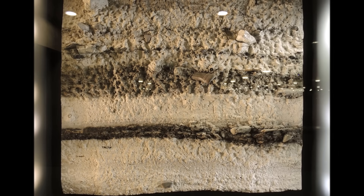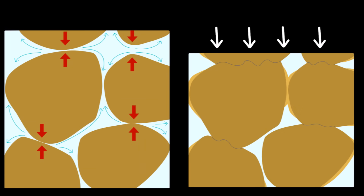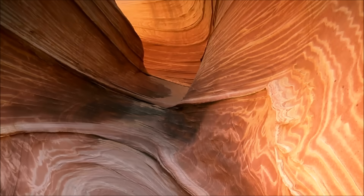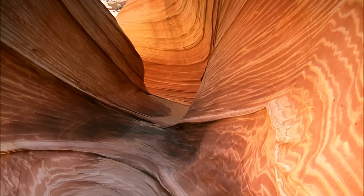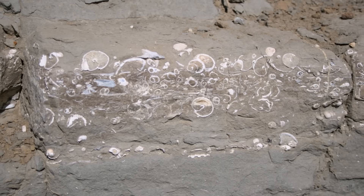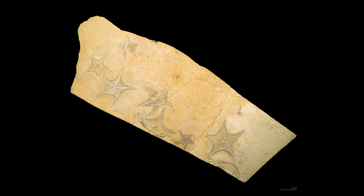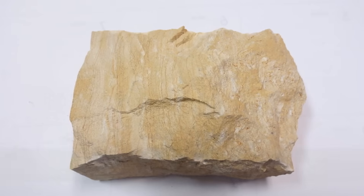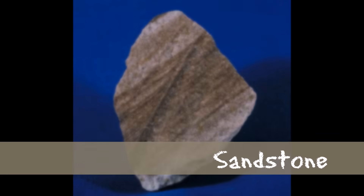Sedimentary rocks are formed when sediment accumulates over time in deposits that form layers. These layers become squeezed and compressed over time until they consolidate into a rock. Sedimentary rocks are the types of rocks in which fossils may be found, since the process of forming sedimentary rocks can preserve plant and animal remains deposited into the sediment layers. Some examples of sedimentary rock are limestone, shale, and sandstone.